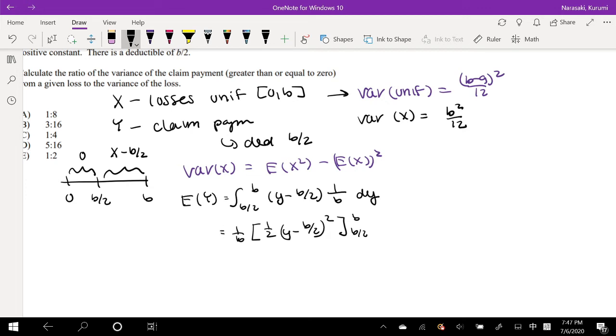Okay, so this would be equal to, I'm going to throw that constant out. So, this would be 1 over b, Y minus b over 2 squared, one half, integrating this from b over 2 to b. So, this will be, I'm going to keep the constants together, 1 over 2b. Plugging in that b for Y, we have b minus b over 2, which is just b over 2 squared minus b over 2 minus b over 2. That's just 0 squared, so this is equal to b squared over 4 times 2 times b. One of the b's cancel out, so we get b over 8.